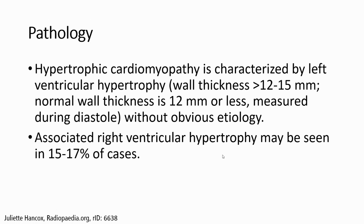Pathology: Hypertrophic cardiomyopathy is characterized by left ventricular hypertrophy, which is more than 12 to 15 mm in thickness. Normal wall thickness is around 12 mm or less. The hypertrophy is present during diastole without obvious etiology. Associated right ventricular hypertrophy may be seen in 15 to 17% of cases.